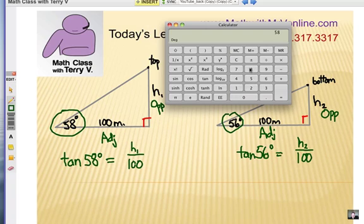So for our tangent of 58, at least on this online calculator on my Mac computer here, I do 58 first and then I hit the tangent button. Now it's 1.60033. Let's just call it 1.6. Now for the tangent of 56, that would be 1.48256. Let's call it 1.483.